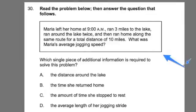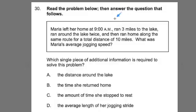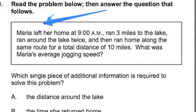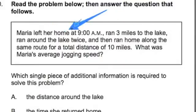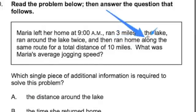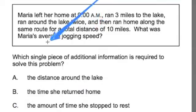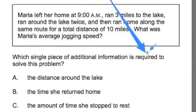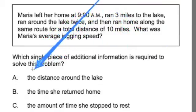All right, so first let's read over what this says here. Maria left her home at 9am, ran three miles to the lake, ran around the lake twice, then ran home along the same route for a total distance of 10 miles. What was Maria's average jogging speed? Then we have a question here: which single piece of additional information is required to solve this problem?